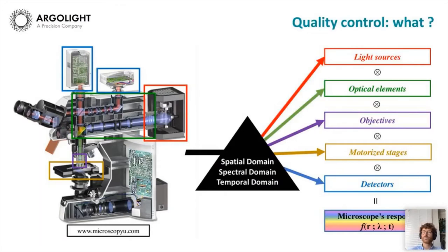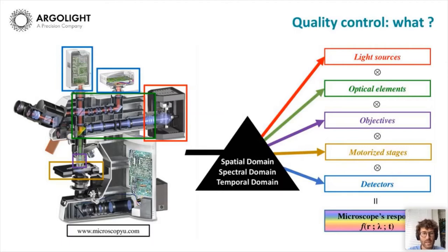Now that we know why we should do quality control, let's discuss what we should do. This diagram shows a widefield microscope — a rather simple system. As we can see, there are several elements that could go wrong: the light source excitation — lamp, LED, or laser — and many optical elements including objectives, motorized stages, and detectors such as cameras, PMTs, or hybrid detectors.